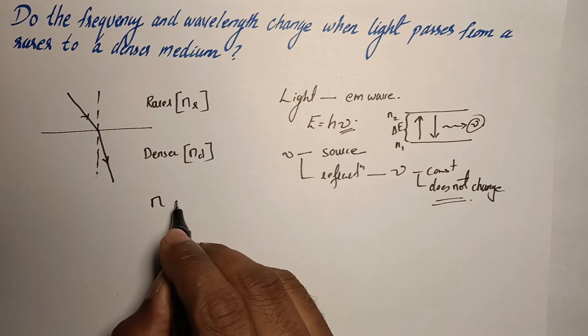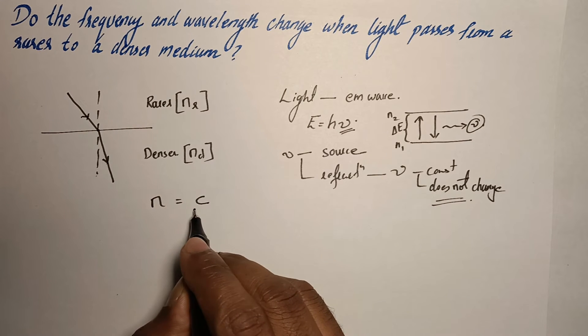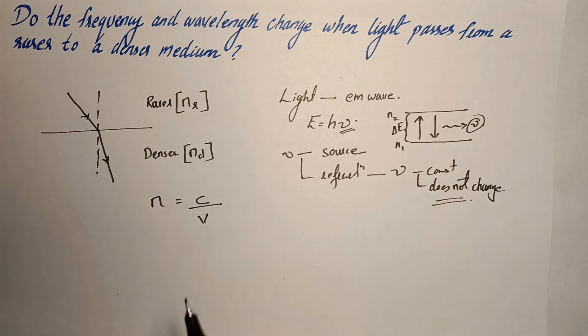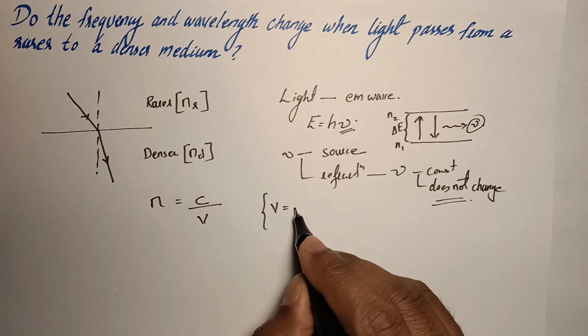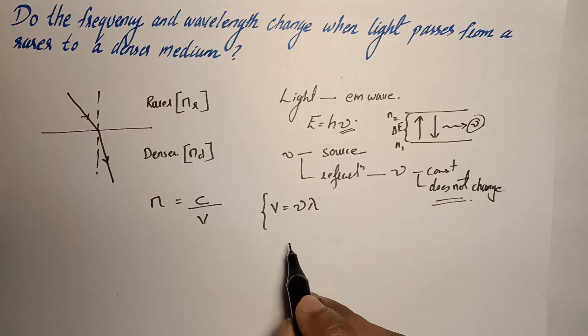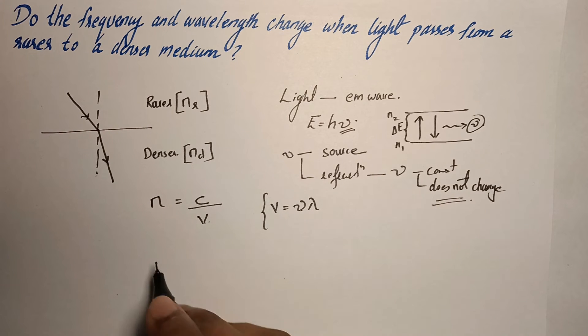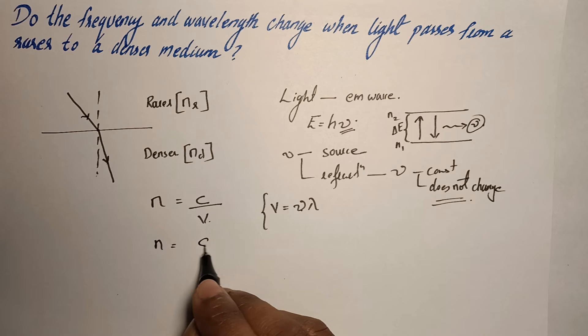The relation of refractive index is velocity of light in vacuum by velocity of light in a medium. And the velocity of a wave can be written as the product of frequency and wavelength. So we'll substitute this value here. So it becomes n is equal to c by nu lambda.